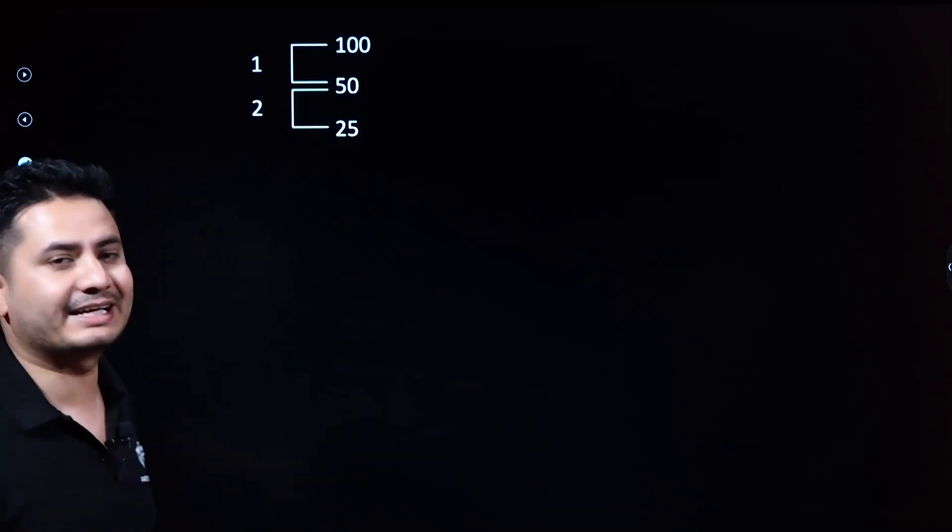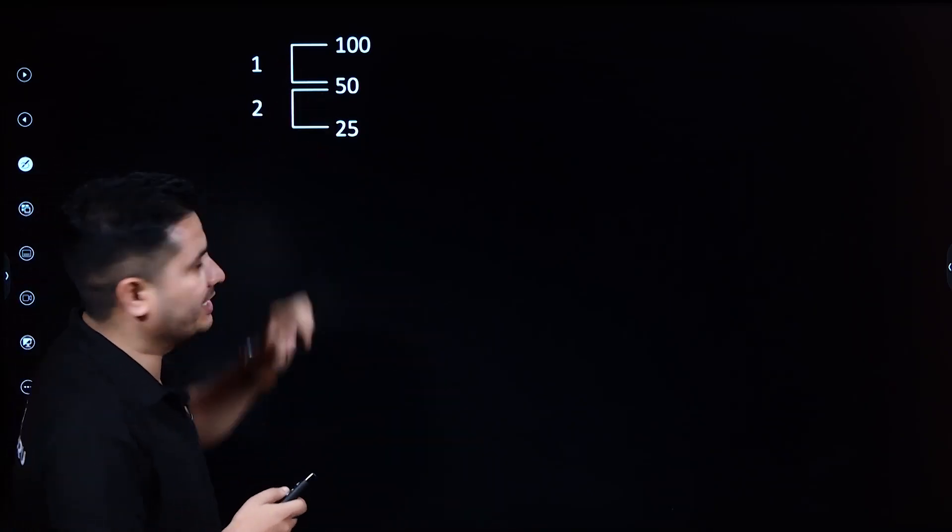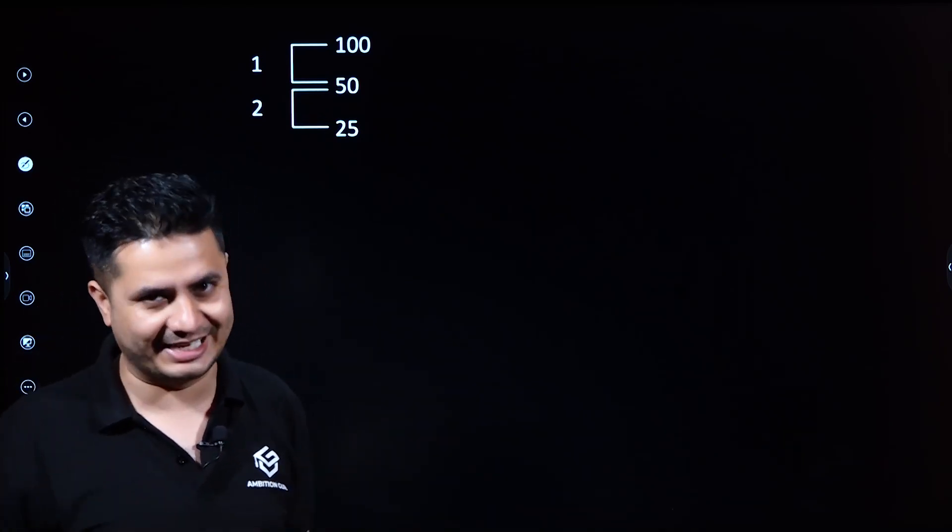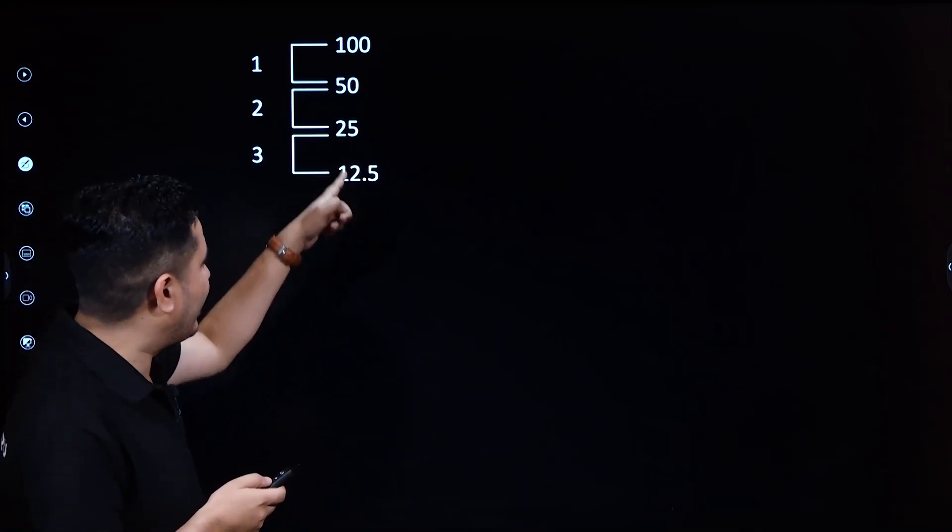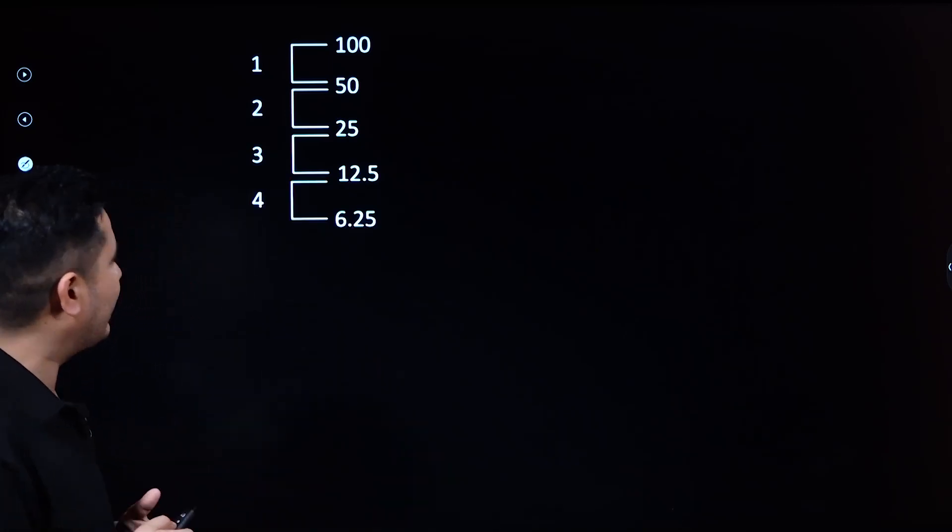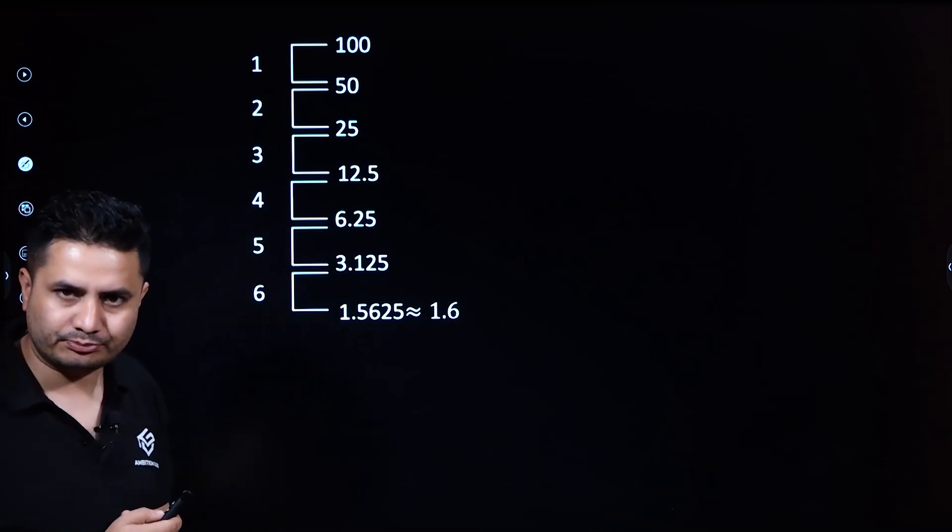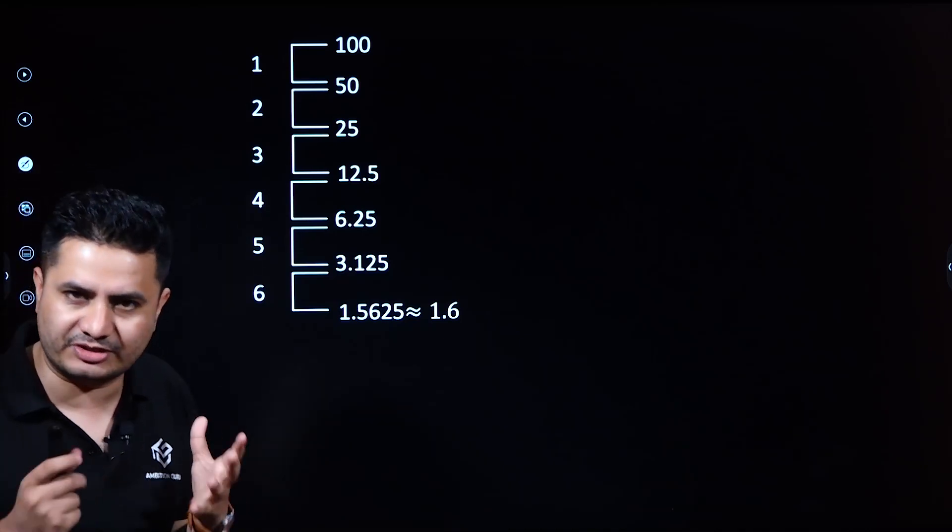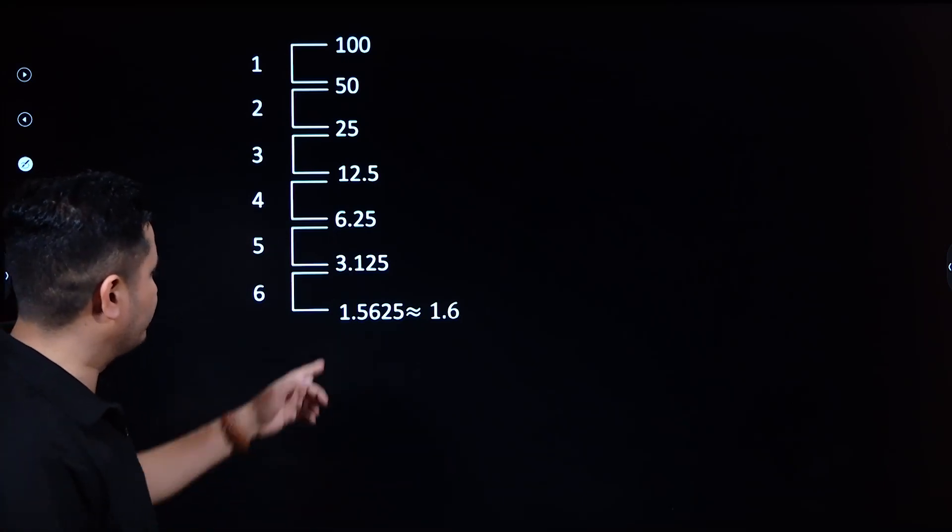After the second half-life period, 50% of 50, that is 25%, remains undecayed. After the third half-life period, 12.5% remains. After the fourth half-life period, 6.25% remains. After six half-life periods, approximately 1.6% remains undecayed.